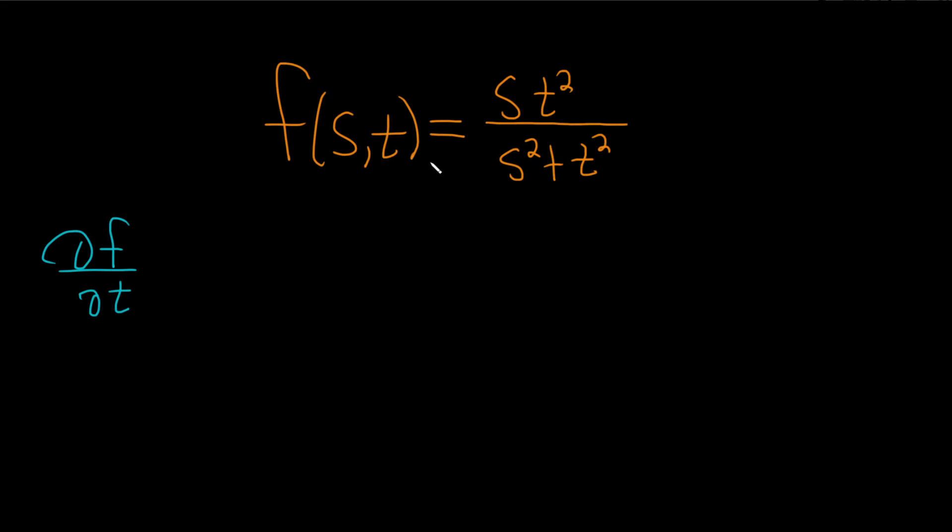So we're going to use the quotient rule in this problem. Recall the quotient rule says if you have a function f and it's being divided by g, think of f as your top function and g as your bottom one. It's the derivative of the top times the bottom minus the top times the derivative of the bottom over the bottom one squared.